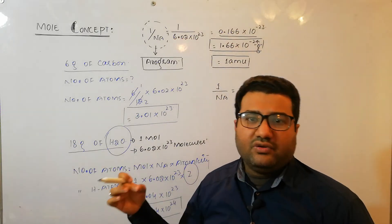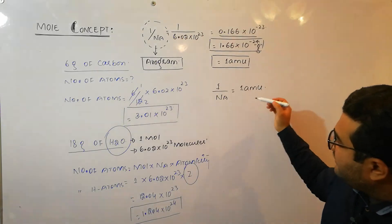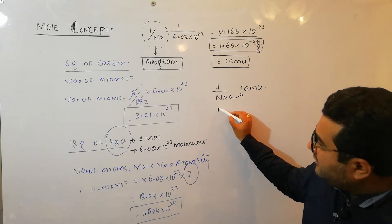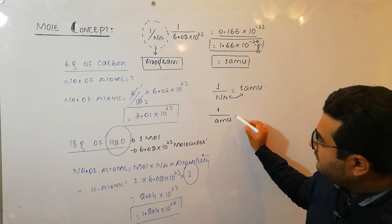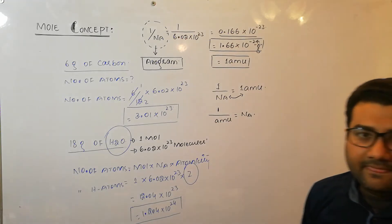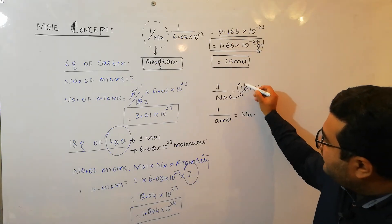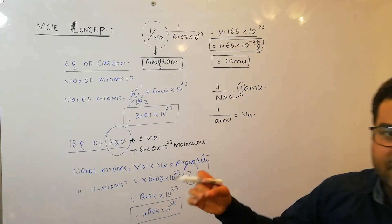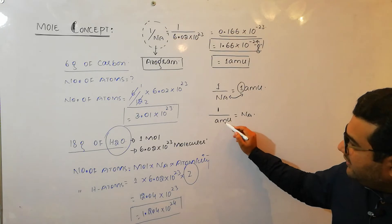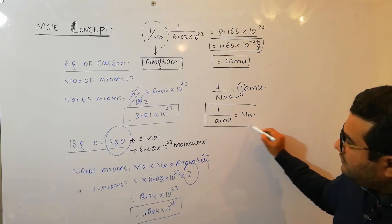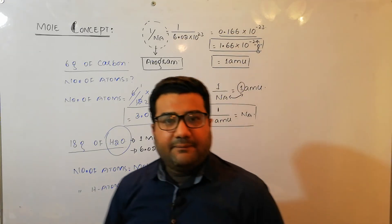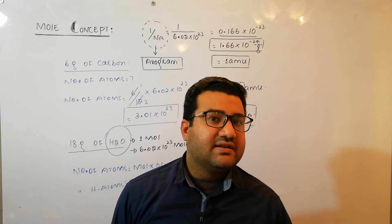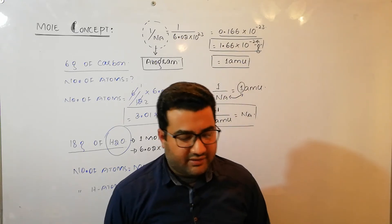From this we can write that Nₐ × AMU = 1, meaning Avogadro's number and AMU are reciprocals of each other. So 1/AMU = Nₐ and 1/Nₐ = AMU. This is a very important relationship to remember.